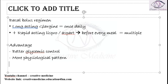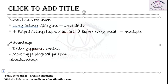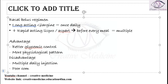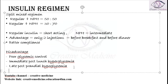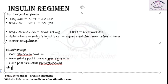It also has a more physiological pattern, since in our body a bolus of insulin is released immediately after eating, followed by a gradual maintenance dose throughout the day. The main disadvantage is multiple daily injections, leading to poor compliance. The basal bolus regimen is preferred in young individuals, whereas the split mixed regimen is preferred in elderly patients.